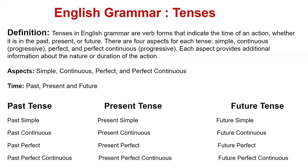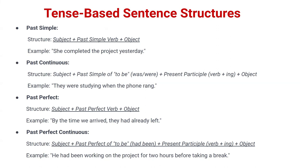So we have: past simple, present continuous, present perfect, present perfect continuous, future simple, future continuous, future perfect and future perfect continuous. Now let's understand tense-based sentence structures.